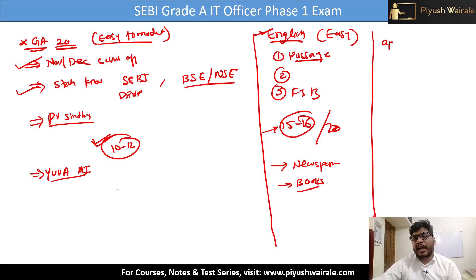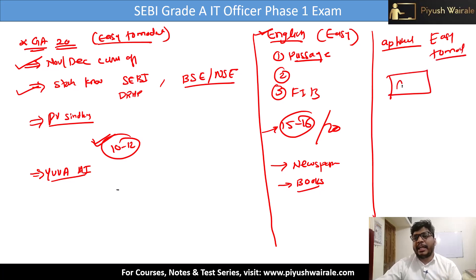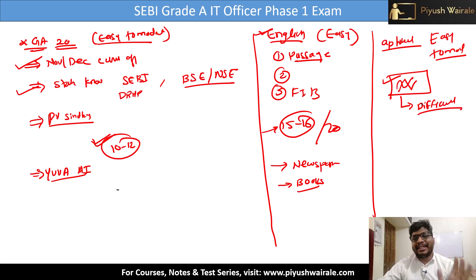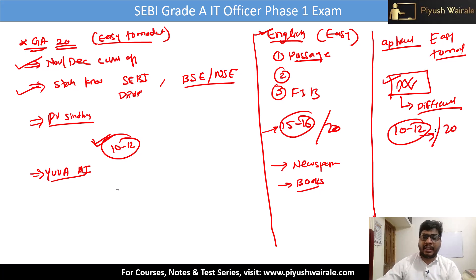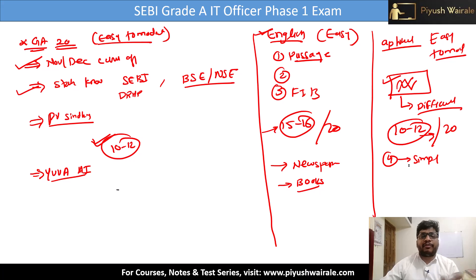Next is the aptitude part — easy to moderate. There was one question based on a line chart; a line graph was given with four or five questions, and those were on the difficult side. Just about all other questions were on the easier side. There were four questions based on simplification — for example, 24.99 multiplied by 14.99 divided by something — simple ones.